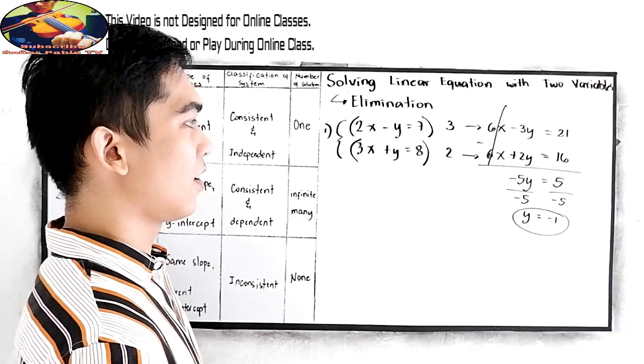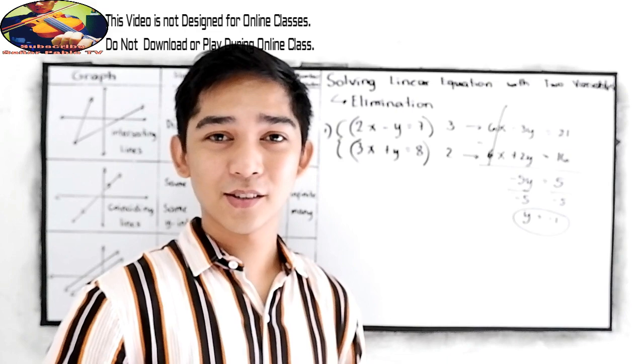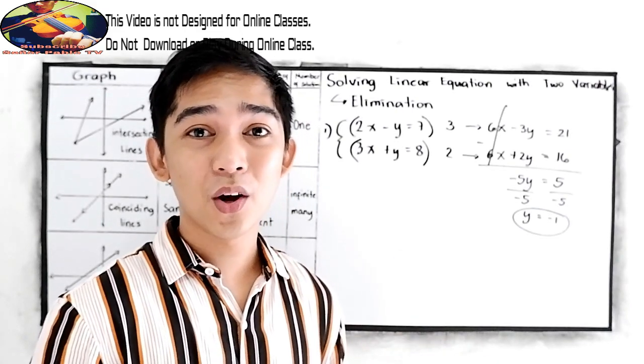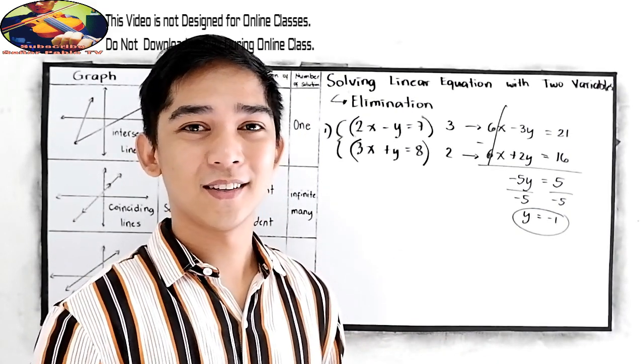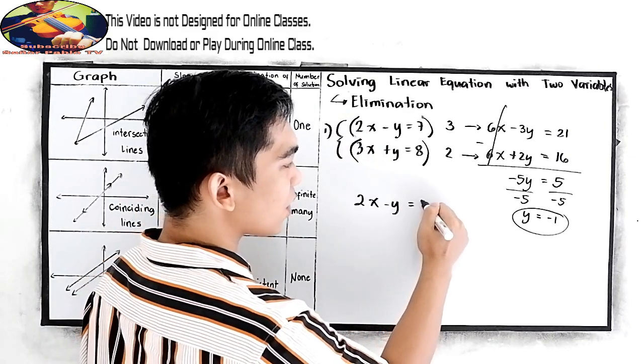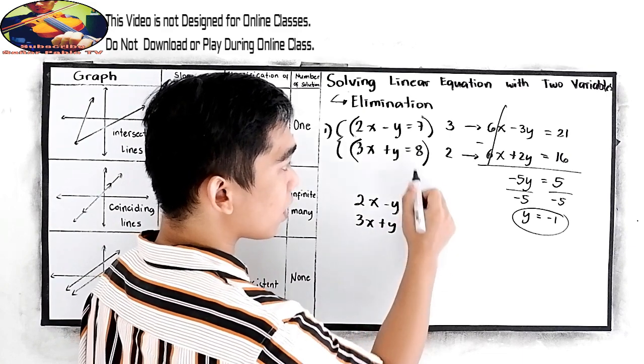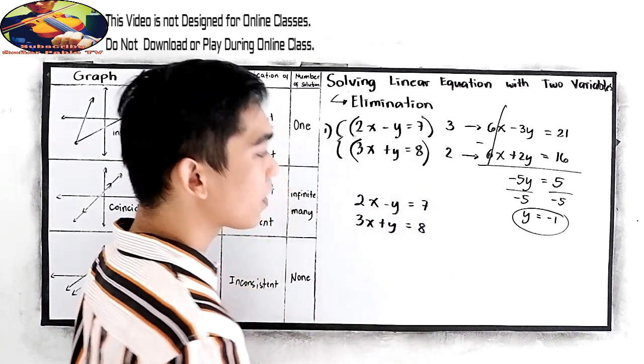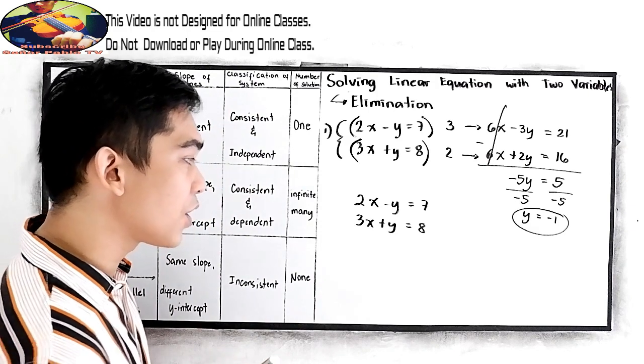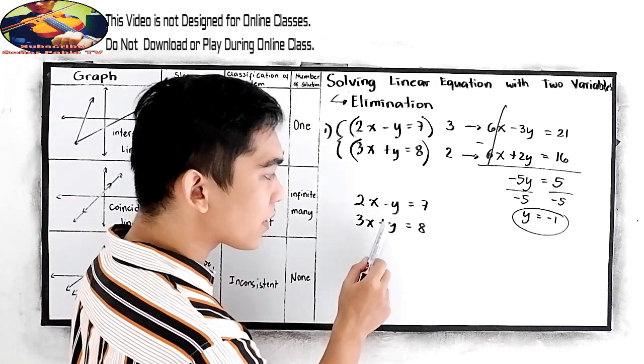Next, we need to find the value for x, so we need to eliminate now the y. So we have 2x minus y is equal to 7, and 3x plus y is equal to 8. Check the coefficient of y. We have negative 1 and positive 1.